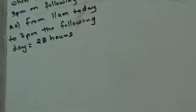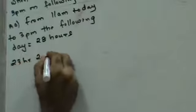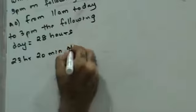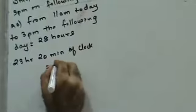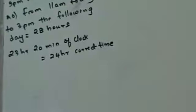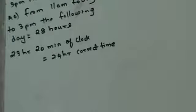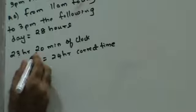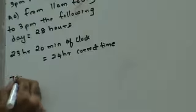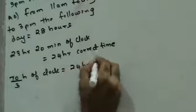If the clock loses 40 minutes, that means 23 hours 20 minutes of the clock equals 24 hours of correct time. 23 hours 20 minutes converted is 70/3 hours of clock equals 24 hours correct time.